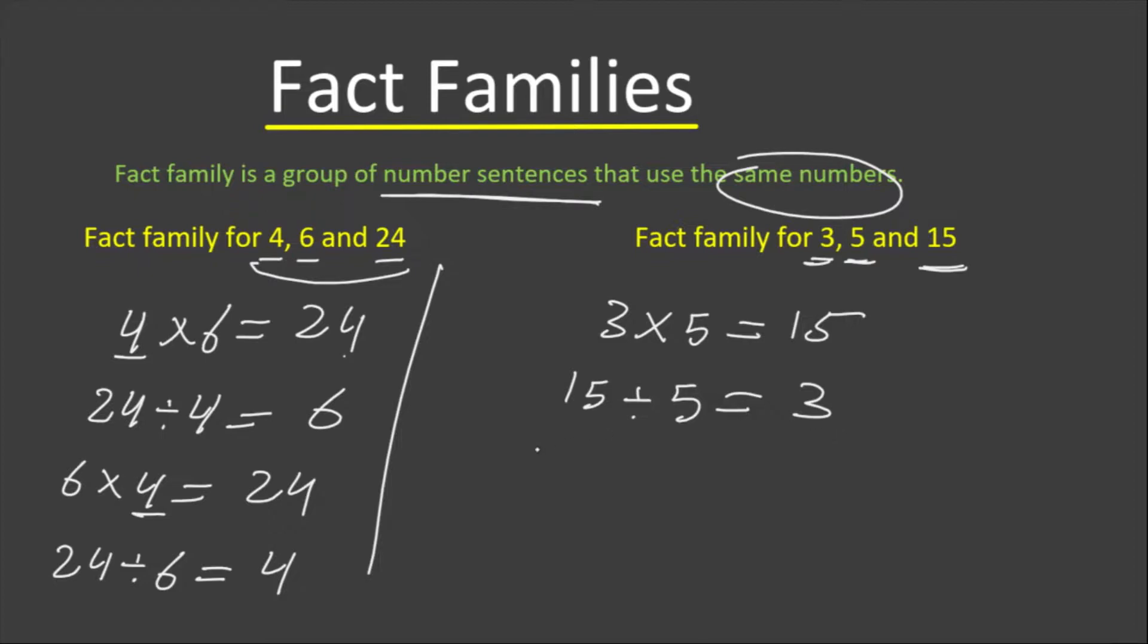And here also, by changing the order of the numbers, we will get the same result. 5 times 3 equals 15.